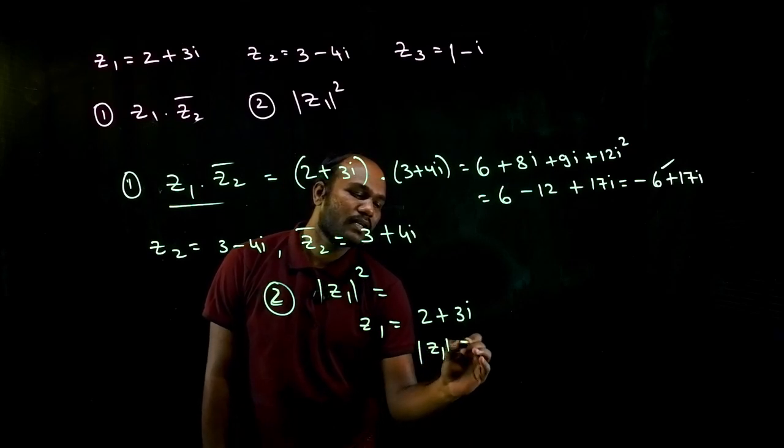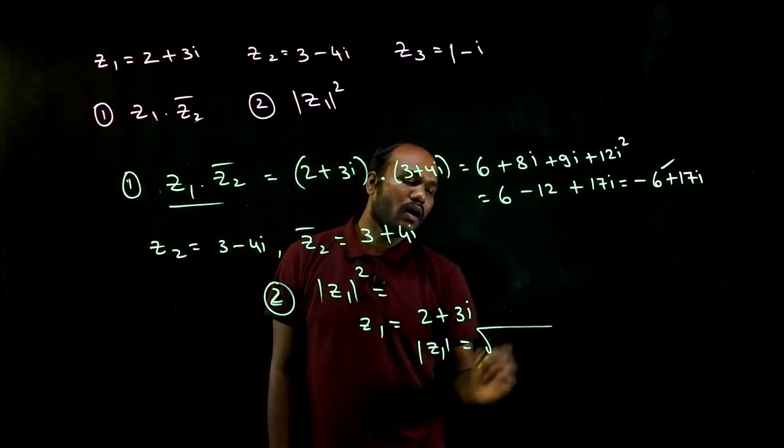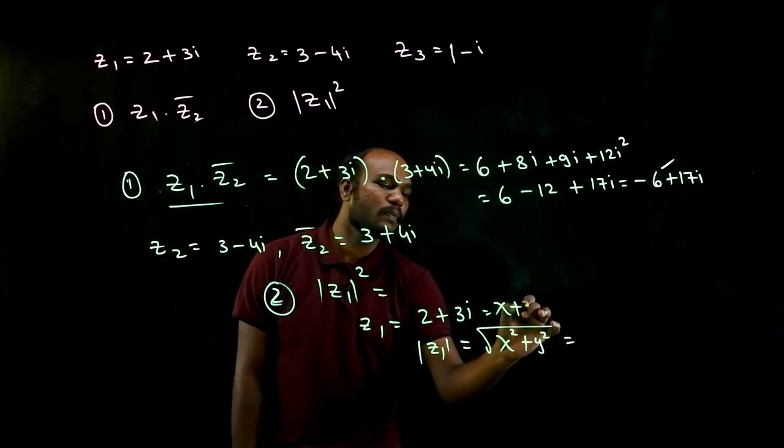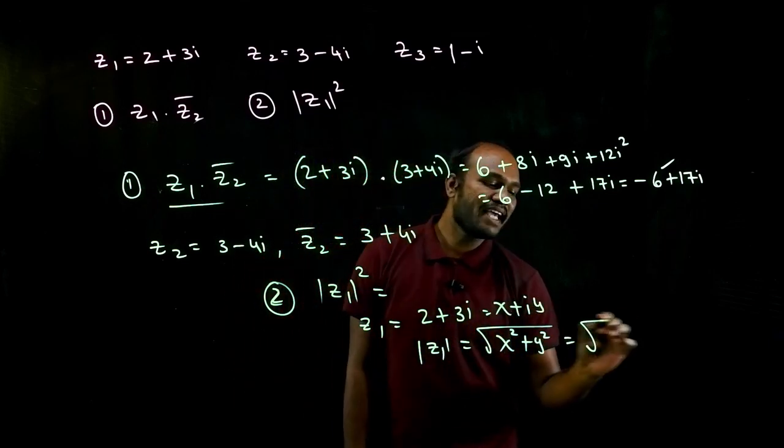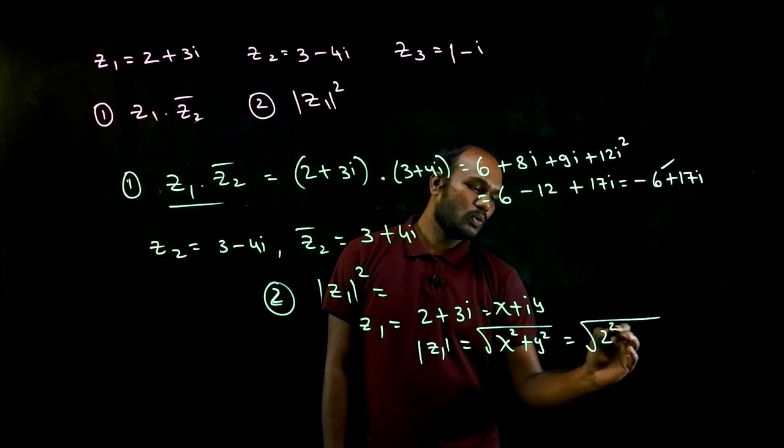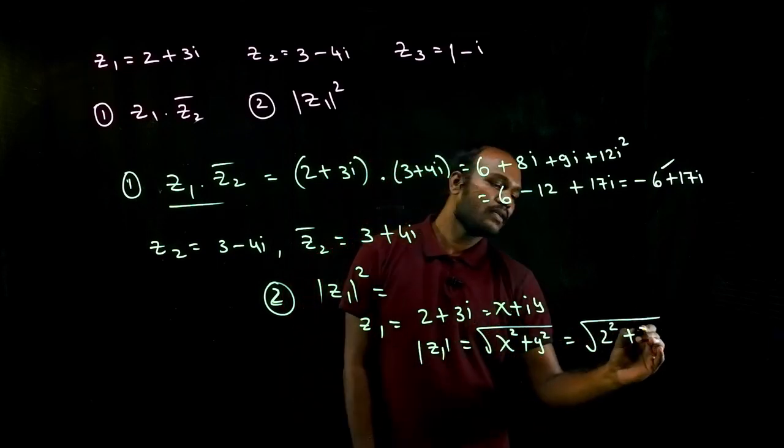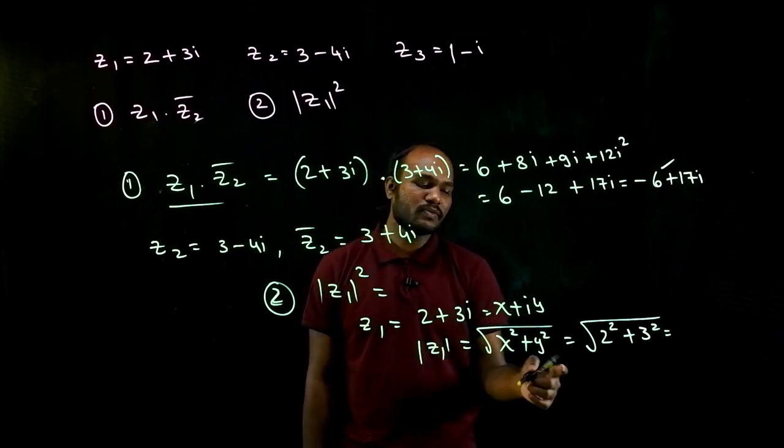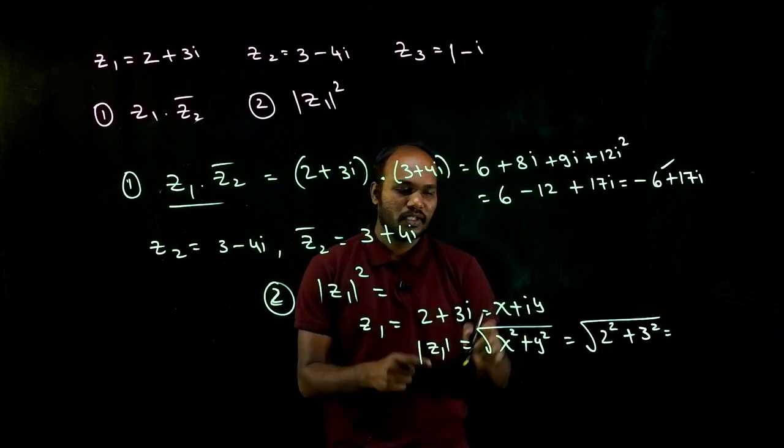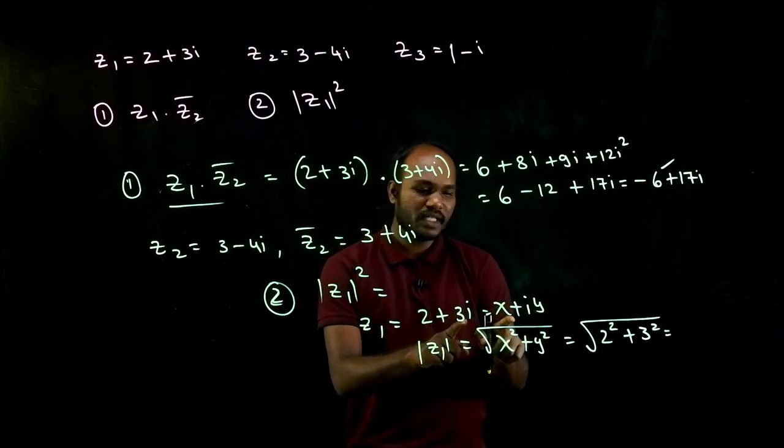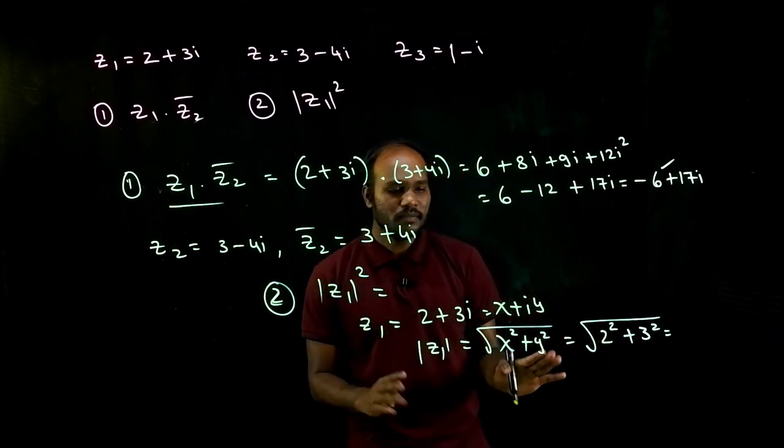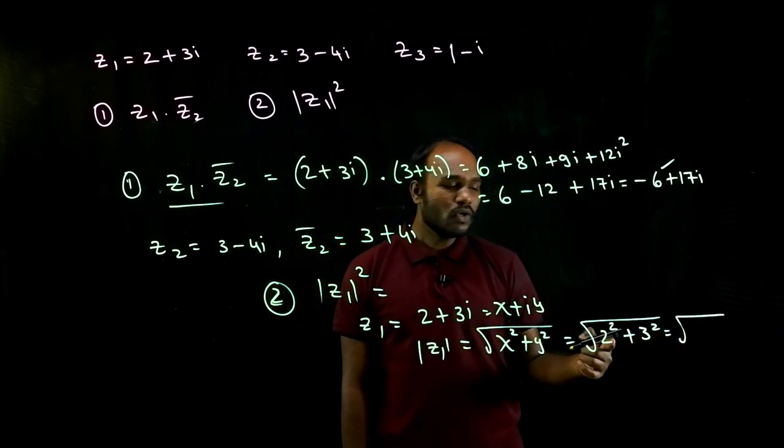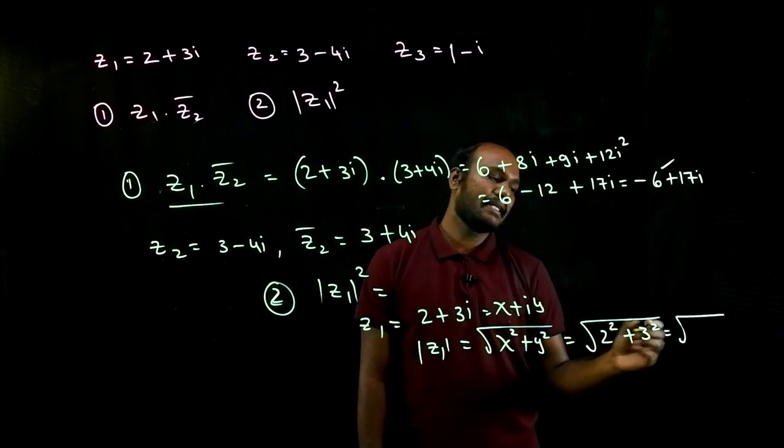So what is the magnitude of z1? Magnitude of z1 is nothing but root of x squared plus y squared. This is the magnitude if this is compared to x plus iy. So what is the value of x? If I compare this, x value is 2, so 2 squared plus what is y value? y value is 3, that is 3 squared. Just the formula for magnitude of any function is root of x squared plus y squared.